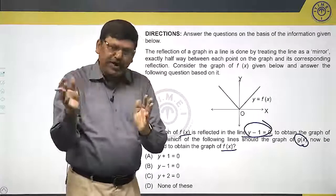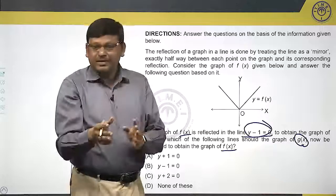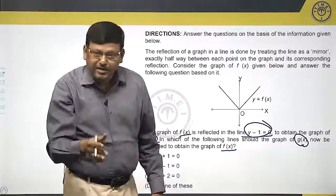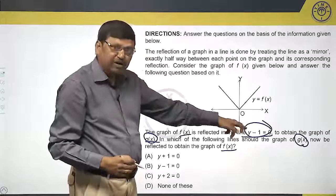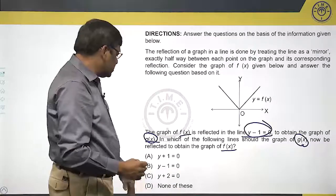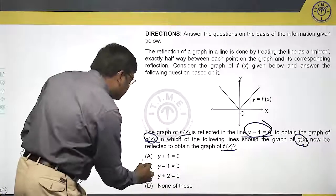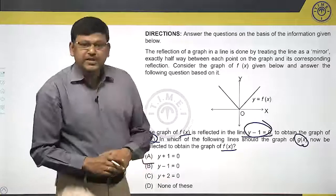If I am trying to undo what I have done, should we not use the same mirror? In other words, the same line. So what is the line that we are using here? y minus 1. So now also we should use the same line: y minus 1 equals 0.